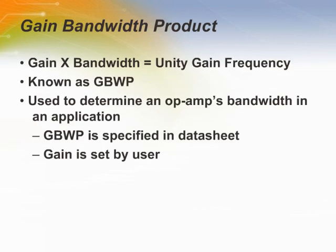A very important relationship in op-amps is the gain bandwidth product. The gain of the op-amp at any given point multiplied by its negative 3 decibel bandwidth gives the unity gain frequency — this is the gain bandwidth product. It is used to determine the op-amp's bandwidth in a certain application. The gain bandwidth product is specified in the datasheet, and the user sets up the gain to find the bandwidth of the circuit.